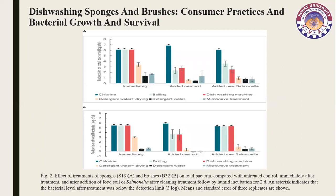Figure 2 shows the effect of treatment of sponges and brushes on total bacteria compared with untreated control, immediately after treatment and after addition of food soil or Salmonella following cleaning treatment, then humid incubation for two days. Graph A shows results after the first day of humid incubation, and graph B shows results after the second day of humid incubation, demonstrating the effectiveness of each cleaning method.